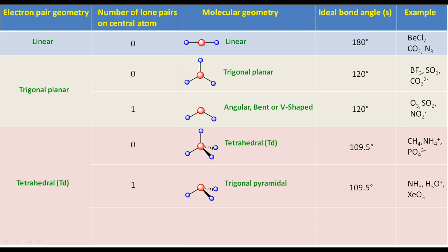If the electron pair geometry is tetrahedral and the number of lone pairs on the central atom is two, then ignore the lone pairs — that will result in angular molecular geometry, also called bent or V-shaped. The ideal bond angle will be 109.5 degrees. H2O, NH2-, and ClO2- are examples of this type of molecule.